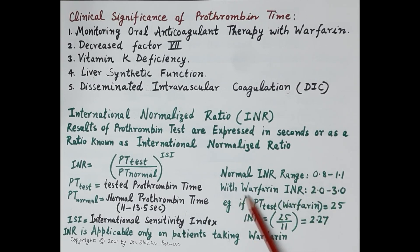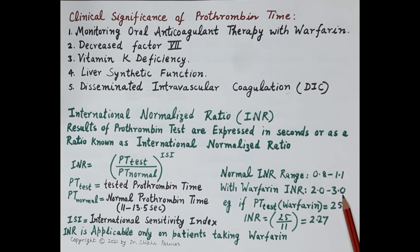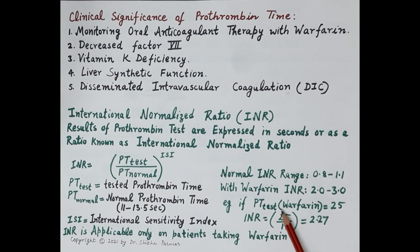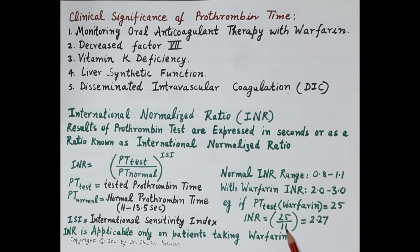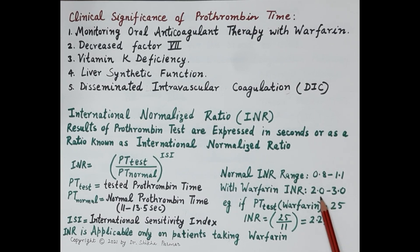The normal INR range is 0.8 to 1.1 for a patient not on therapy. For a patient on warfarin, INR should be between 2 and 3. For example, if the PT of a patient on warfarin is 25 seconds, then INR = 25 / 11 = 2.27. Since 2.27 lies between 2 and 3, the dose given to the patient is appropriate — there is no need to increase or reduce it.